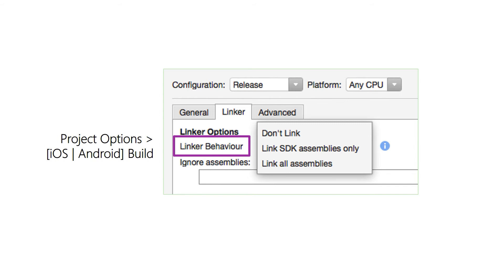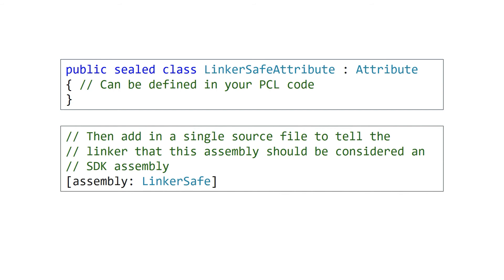This option is controlled in the project options under the build tab for either iOS or Android. In the Android dialog you can see the linker behavior — you can choose 'Don't Link', 'Link All Assemblies', or the safe version 'Link SDK Assemblies Only'. If you create shared framework assemblies, you can include your own assemblies as part of that SDK set by defining a custom attribute named LinkerSafe attribute. You can define your own version to avoid taking a dependency on the iOS/Android runtime, and the linker will look for that name in any namespace, telling it to include your assembly in the SDK list.